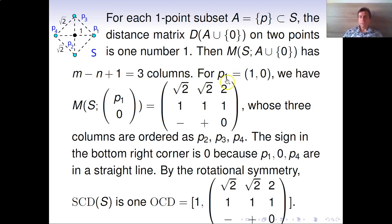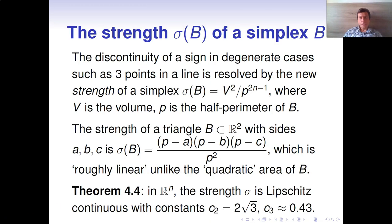So for this point P1, we have the following matrix of distances to the pair P1 and the origin. In addition to distances written here in the first rows, we write down signs of areas, signed areas of triangles. The last sign here is 0 only because the points P1, the center of mass, and P4 are in one straight line. Due to the rotational symmetry, the resulting invariant will consist of a single pair here. The sign of the determinant changes discontinuously from plus to zero to minus in degenerate cases.